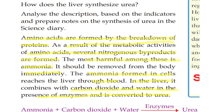Several nitrogenous byproducts are formed as a result of metabolic activities. The most harmful among these is ammonia, and it should be removed from the body immediately. Ammonia reaches the liver through blood, where it combines with carbon dioxide and water in the presence of enzymes and is converted into urea. In summary: Ammonia + Carbon dioxide + Water → (enzymes) → Urea.